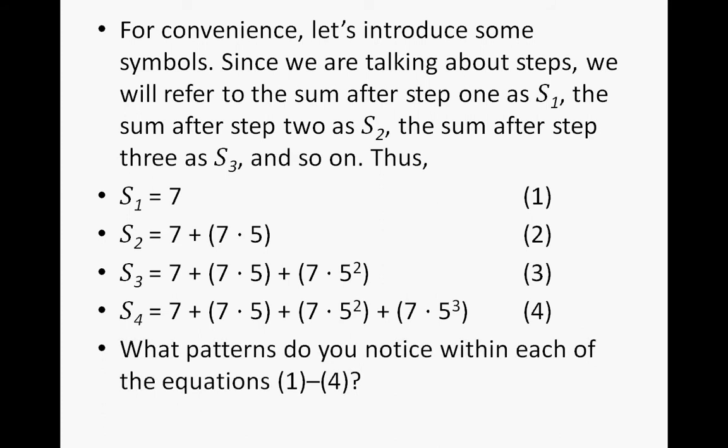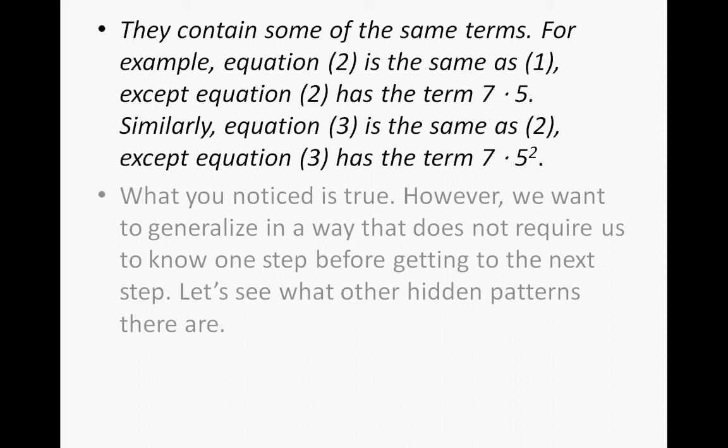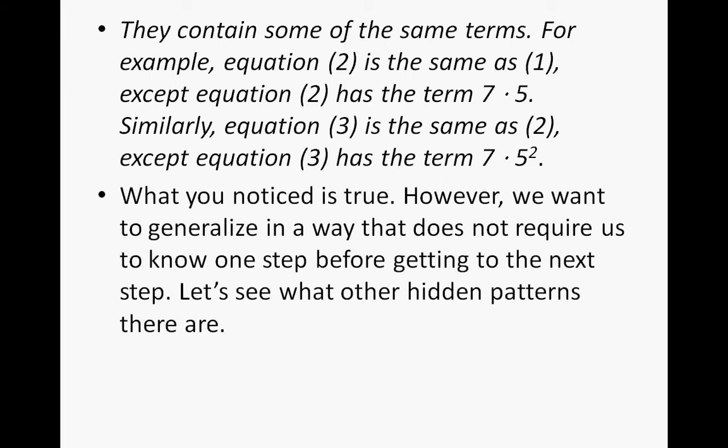What patterns do you notice within each of the equations 1 through 4? Well, they contain some of the same terms. For example, equation 2 is the same as equation 1, except equation 2 has the term 7 times 5. Similarly, equation 3 is the same as equation 2, except equation 3 has the term 7 times 5 squared. However, we want to generalize it in a way that does not require us to know one step before getting to the next step, so let's see what other hidden patterns there are.